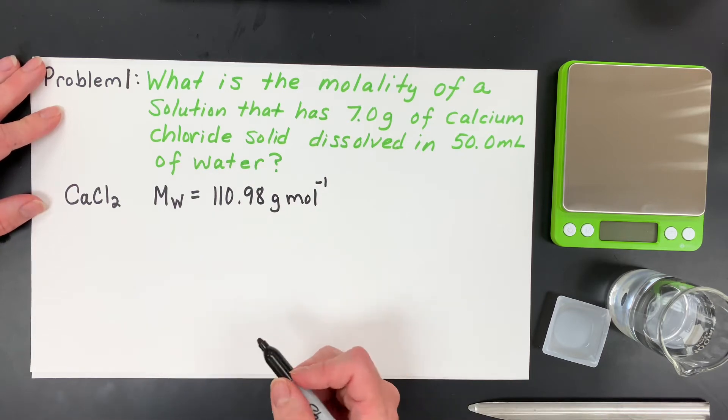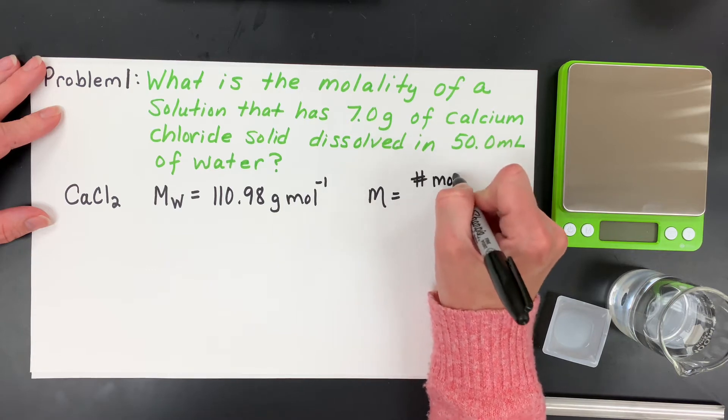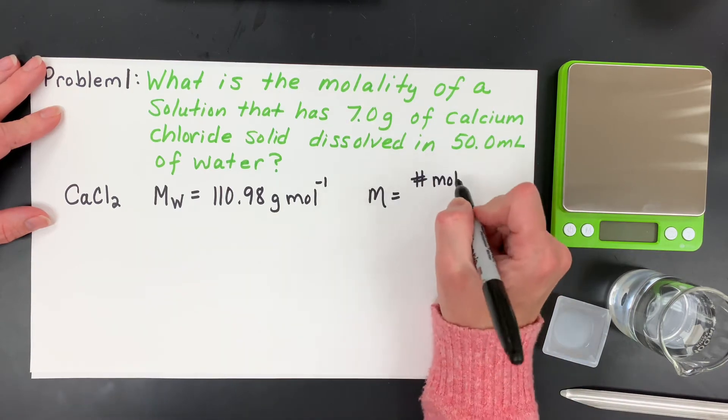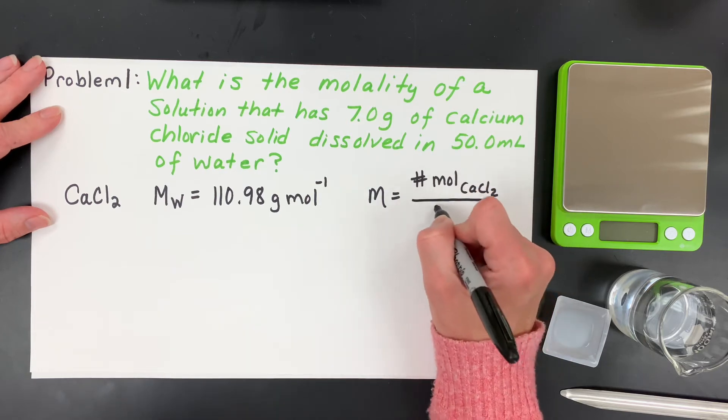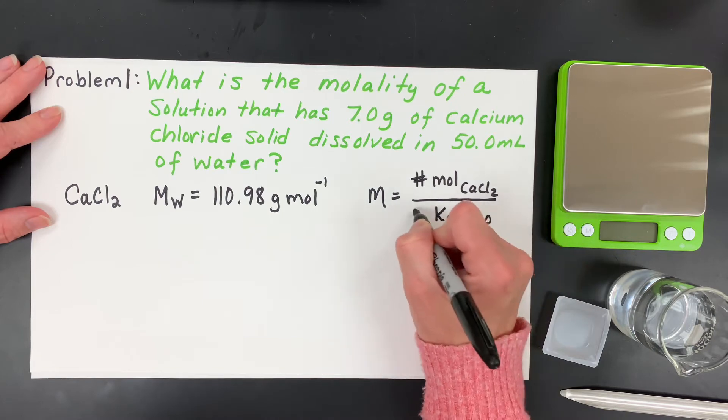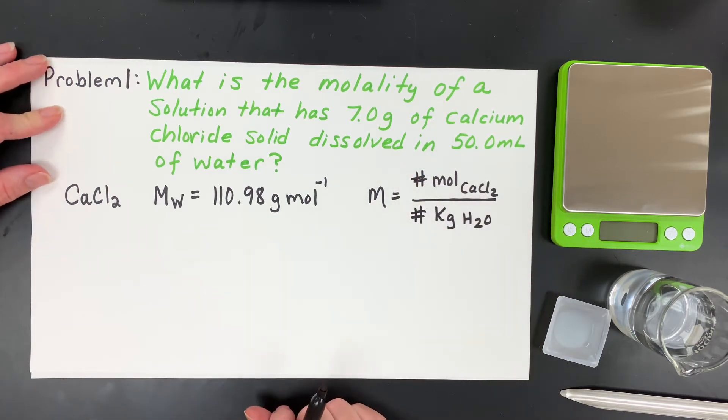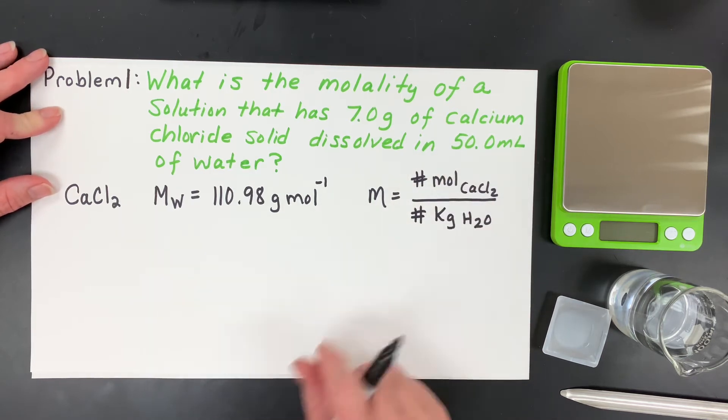If I want to solve for the molality, don't forget, that's the number of moles of our solute, in this case it's going to be our calcium chloride, divided by the kilograms of our solvent. We'll be putting a number in the numerator and the denominator because we have 50 milliliters, which is definitely not a kilogram of water.